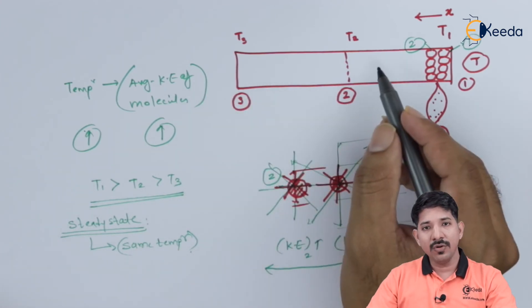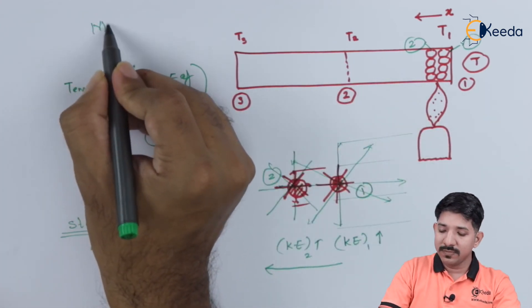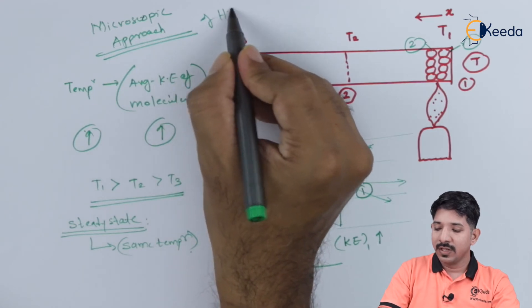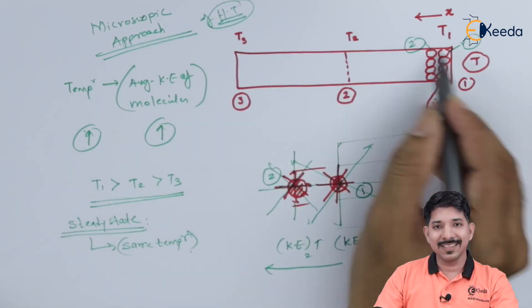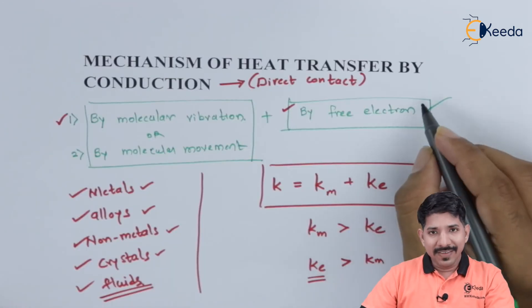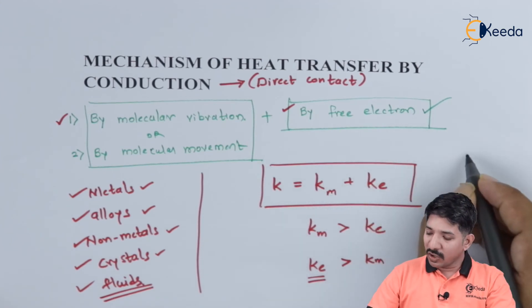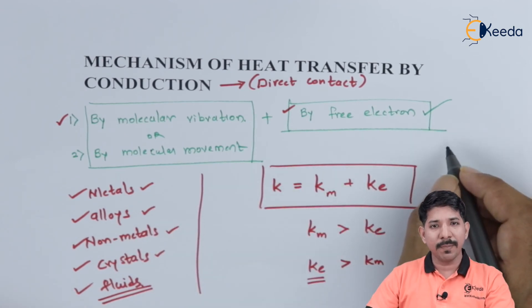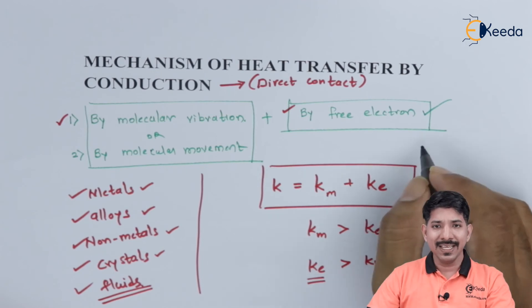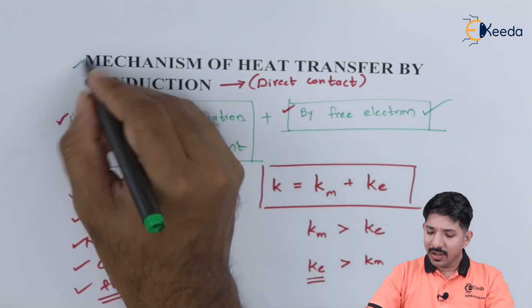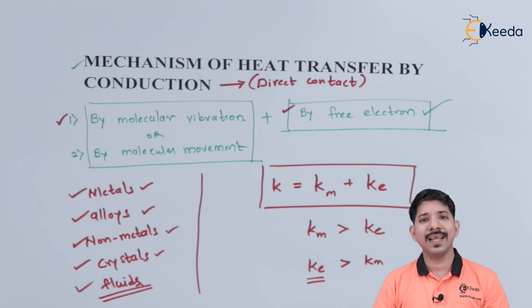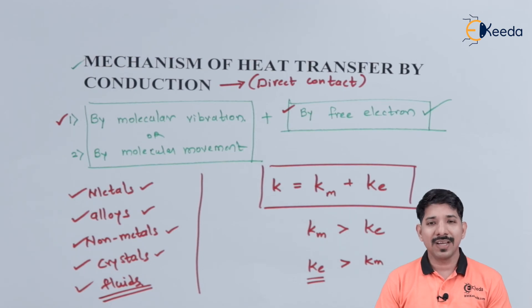We have described the microscopic approach of heat transfer — how conduction takes place at the molecular level. Similarly, we can talk about heat transfer by free electrons. Because of the existence of free electrons in the outer orbit in the case of metals, those free electrons can travel from one part to another part, carrying heat in the form of kinetic energy. So basically there are two ways by which heat can be transferred: one is by molecular movement and the other is by free electrons.